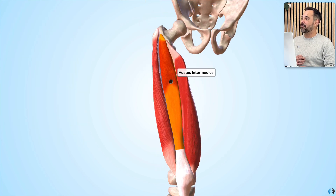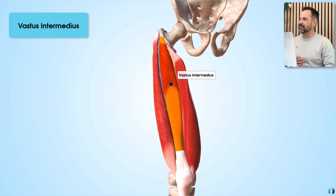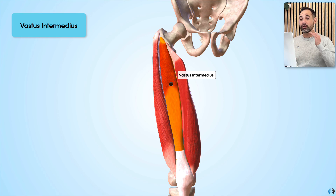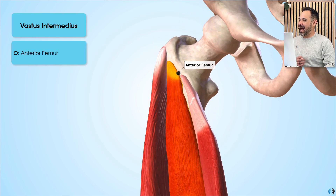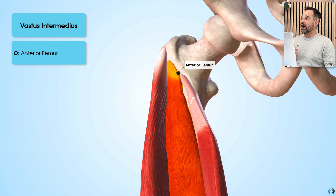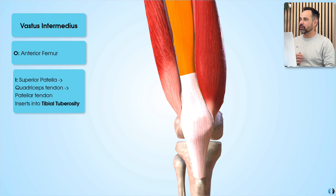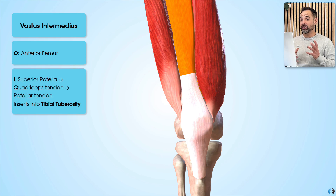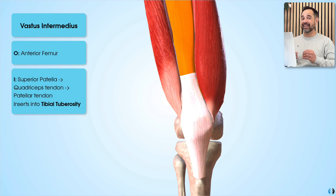And finally we have vastus intermedius, right down the middle, which sits underneath — or deep to — the rectus femoris muscle. The origin of this is the anterior femur around the intertrochanteric line, as you can see. Like the other muscles, it joins onto the quadriceps tendon, which then blends into the patella tendon, joining into the tibial tuberosity.